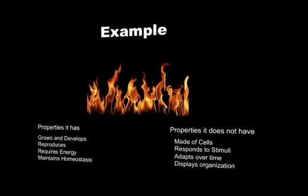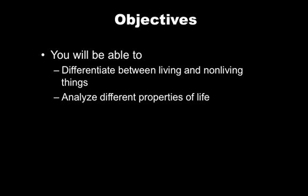There are a few instances in which life can occur without having some of these properties. For example, a mule — an organism with a donkey for a dad and a horse for a mom — is a hybrid of two different species and cannot reproduce. However, that certainly doesn't mean it's not living. Can you think of any more exceptions to the rules like this? In revisiting our objectives, hopefully you're now able to differentiate between living and non-living things and analyze different properties of life.